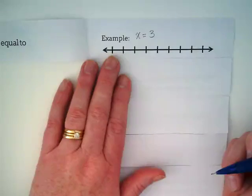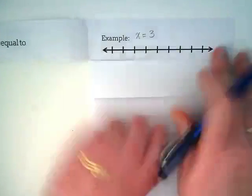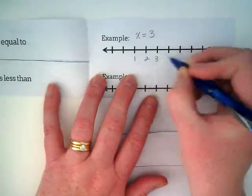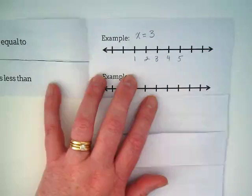I really don't want you guys spending tons of time labeling number lines. So I'm just going to do 1, 2, 3, 4, 5. I don't even need to fill this whole thing in.